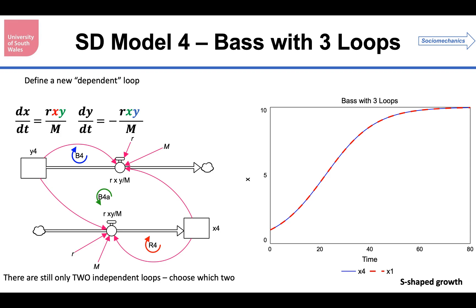It's now a three-loop model. But only two of the loops are independent, because the other loop can be expressed in terms of the other two. But you can choose which two. If I was looking at the growth of x4, I would probably choose R4 and B4A. If I was going to look at the decline of Y4, I would choose B4 and B4A. So the explanation now is that R4 is the accelerator for x, and B4A is the decelerator for x. Same, exactly the same behavior, exactly the same time graph. And we now have four models.